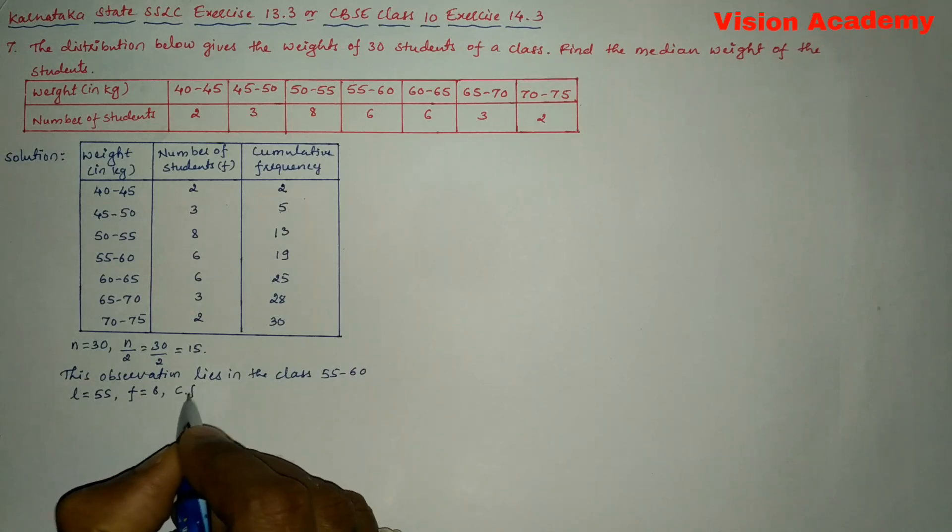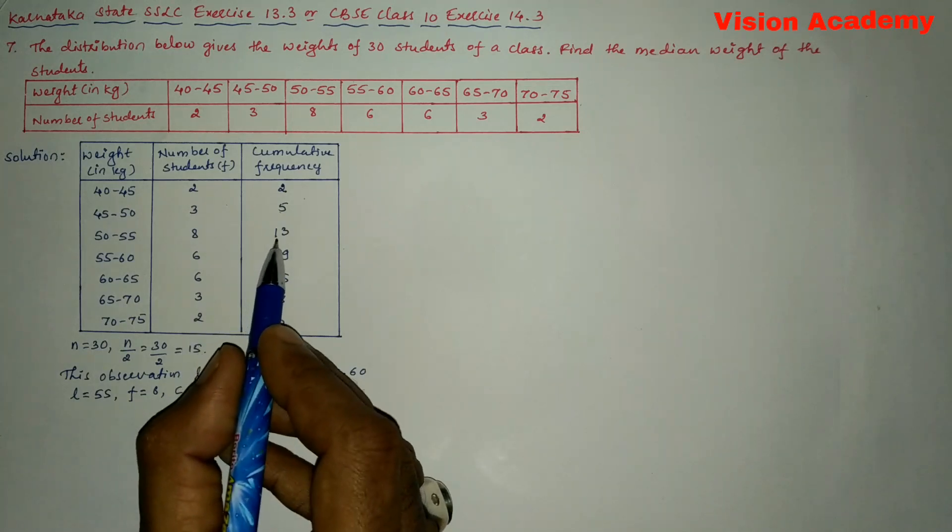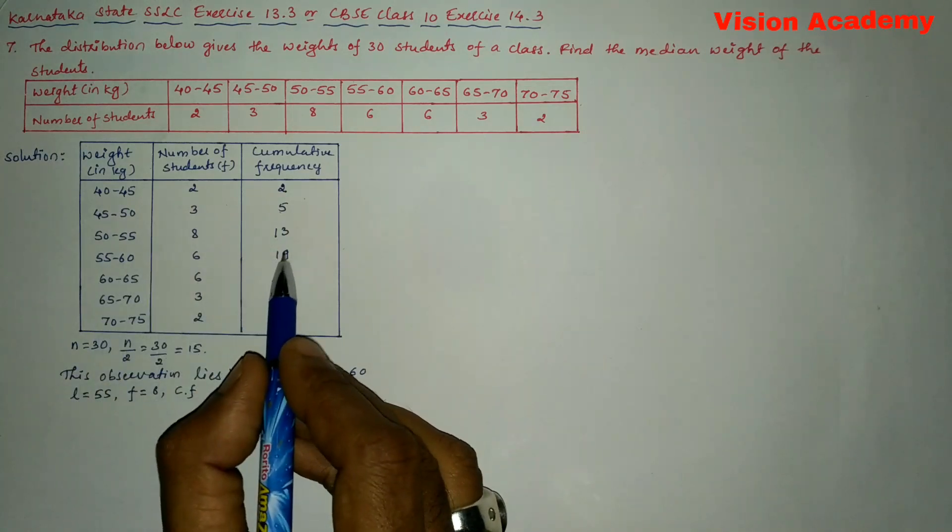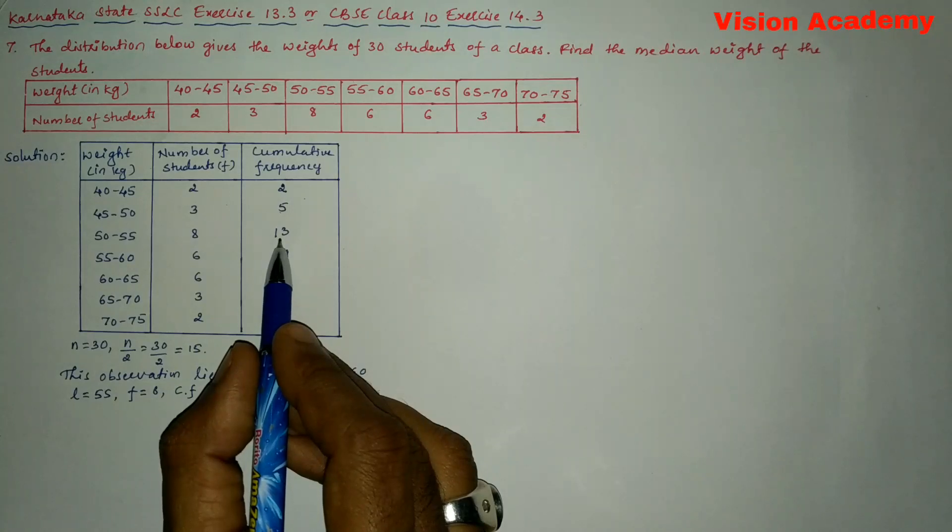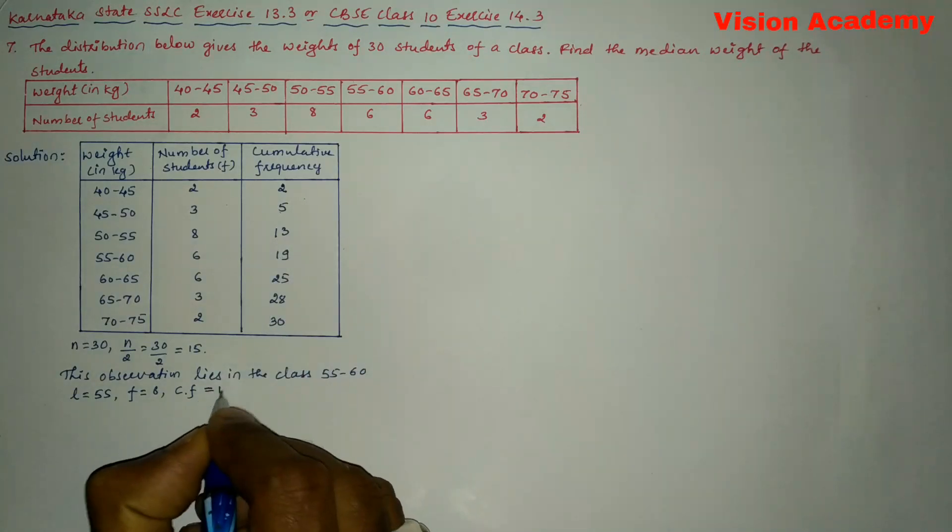Next we will write cumulative frequency of the modal class 55 to 60 preceding frequency. So that is 55 to 60 class preceding class cumulative frequency is 13. So let us write cf equals 13.